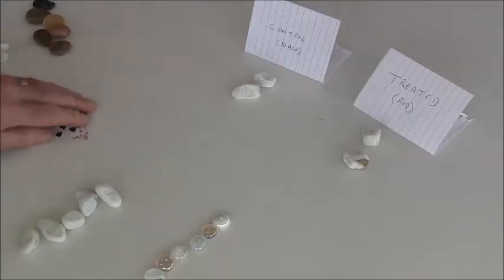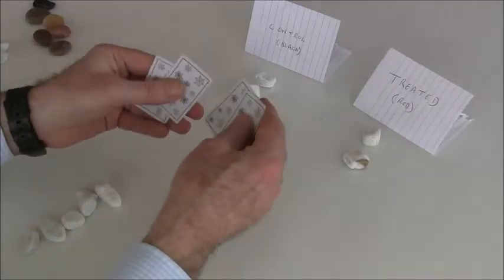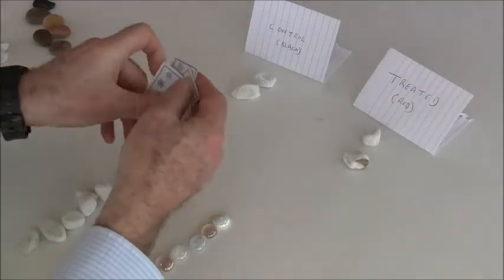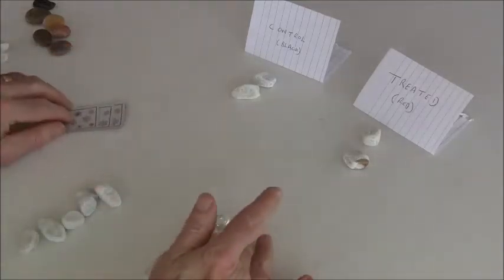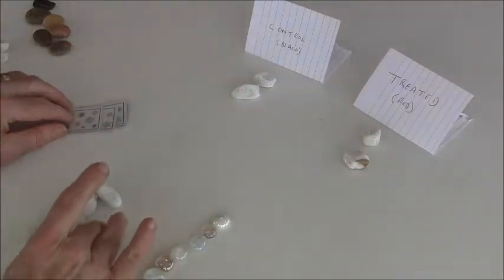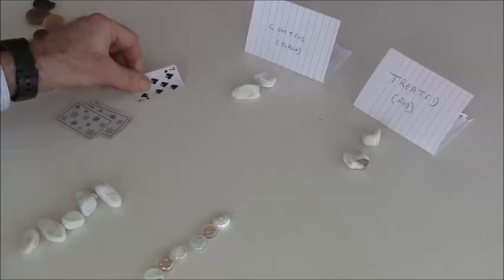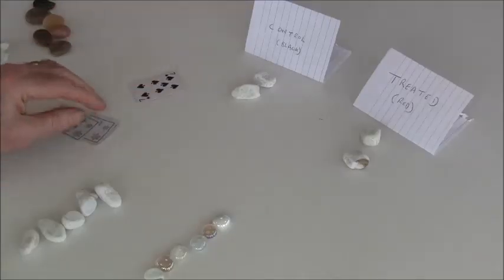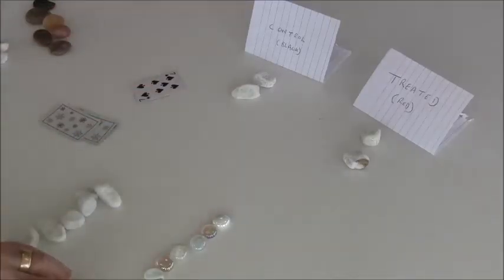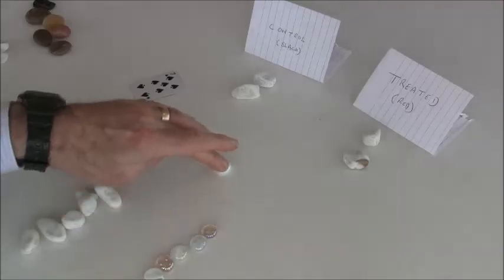So we then decide we'll randomize the beads. So we shuffle the cards again and then we turn them over in sequence. And again, as I mentioned in the last video, it's important that you have an order of the patients so that you know which order they're going to go in. So for example, when I turn over a black card, I don't choose any one of these particular beads. I choose the first one.